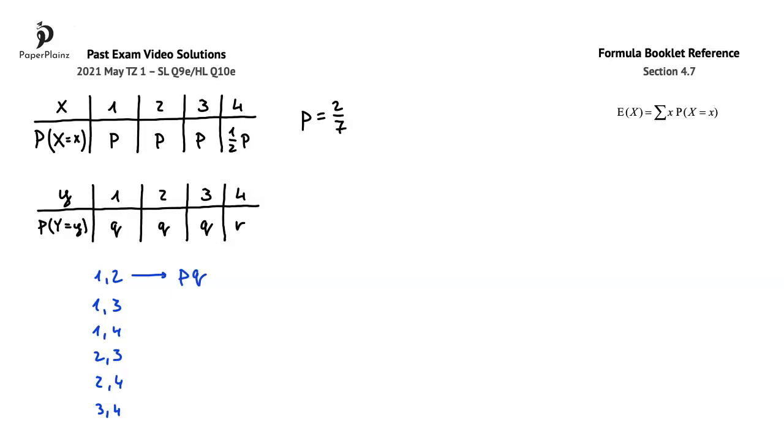Using the same logic, for an outcome of 1 and 3, we also get PQ. For 1, 4, we get PR. For 2, 3, we get PQ. For 2, 4, we get PR. And for 3, 4, we also get PR.